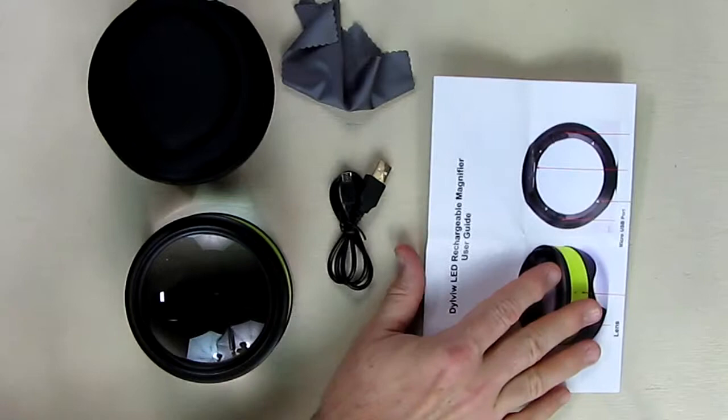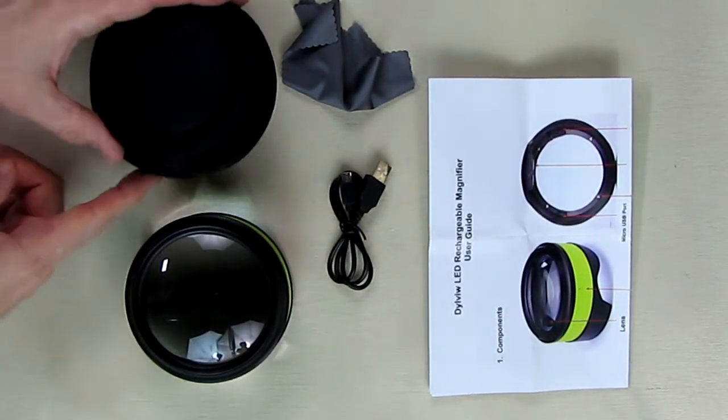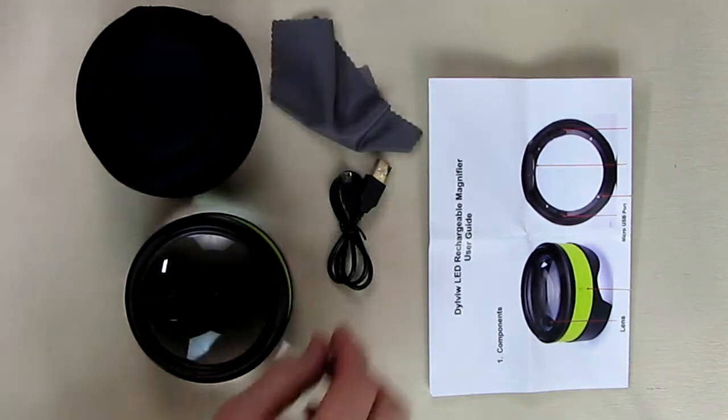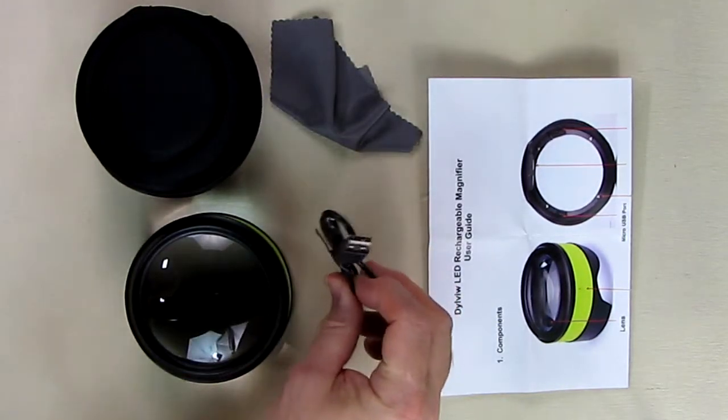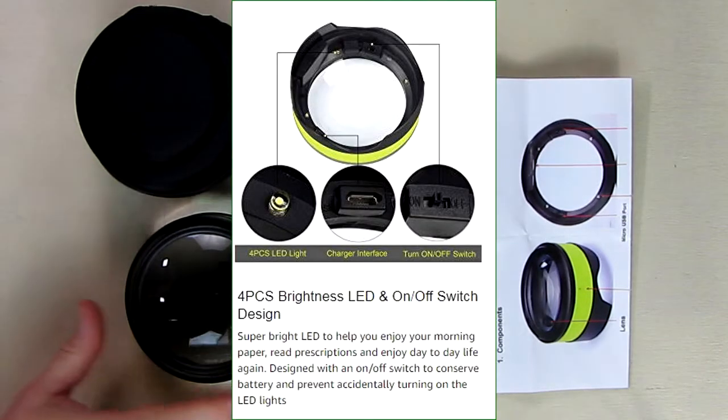User guidance is also included to help you understand how to use it. Included is this very nice case and a white cloth for the lens and a charger with a micro USB to USB charger. We're going to go over all the operations of this.